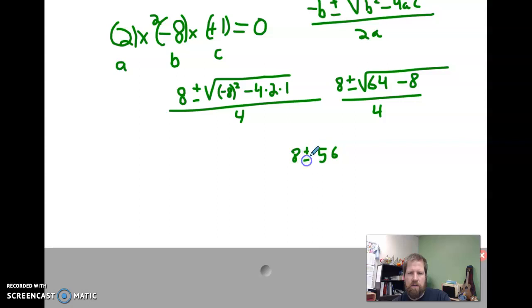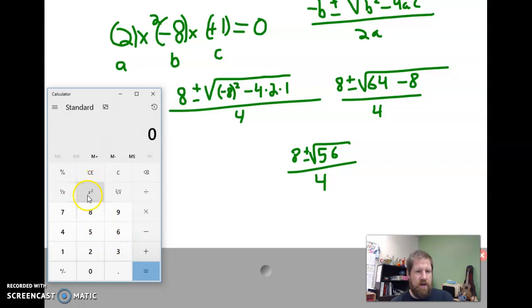8 plus or minus the square root of 56 over 4. And this is where we need to know how exact we need to be. In this case, I think we'll go to the maybe nearest 10th. And we're not doing anything too precise. Pull up the calculator. Square root of 56 should be somewhere between 7 and 8, maybe 7 and a half. Square root of 56, 7.48. So, yeah, we'll round that to 7.5.